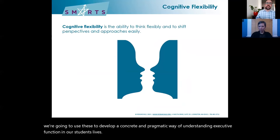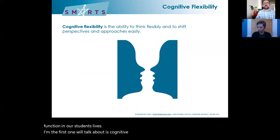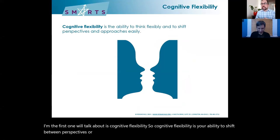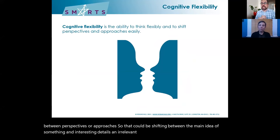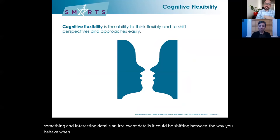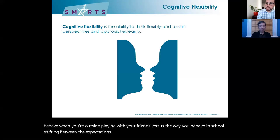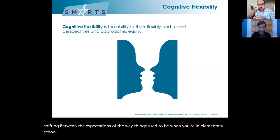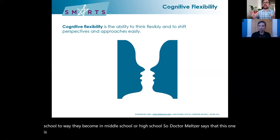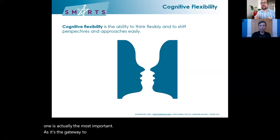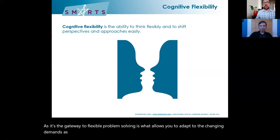The first one is cognitive flexibility — your ability to shift between perspectives or approaches. That could be shifting between the main idea and interesting or irrelevant details, between how you behave outside with friends versus in school, or between expectations from elementary school versus middle or high school. Dr. Meltzer says this is actually the most important, as it's the gateway to flexible problem solving and adapting to changing demands — which is crucial in remote learning.